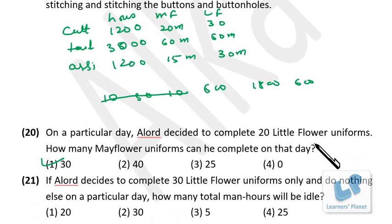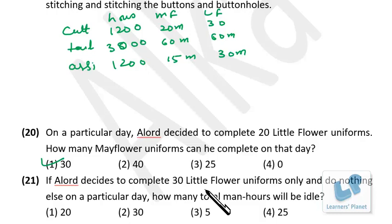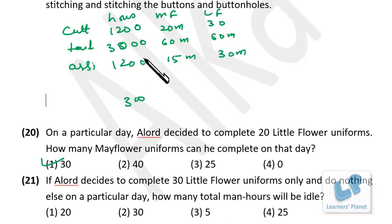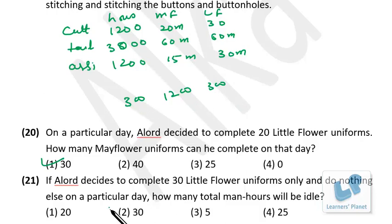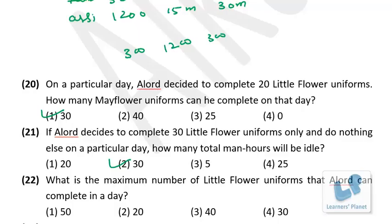Question 2: If only 30 Little Flower uniforms are made, how many total worker-minutes are idle? Cutting used: 30 × 30 = 900 min; idle = 1200 − 900 = 300 min. Tailoring used: 30 × 60 = 1800 min; idle = 3000 − 1800 = 1200 min. Buttons used: 30 × 30 = 900 min; idle = 1200 − 900 = 300 min. Total idle = 1800 minutes = 30 man-hours.